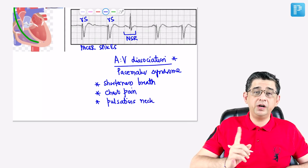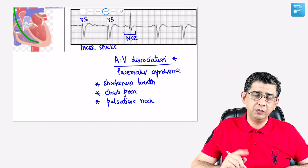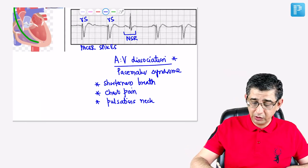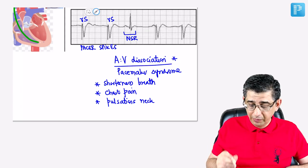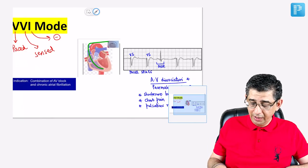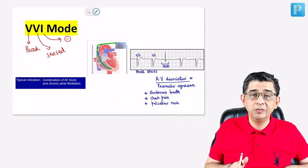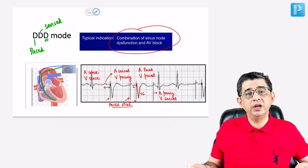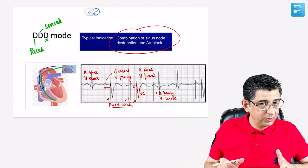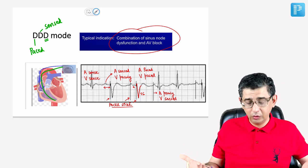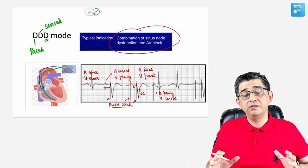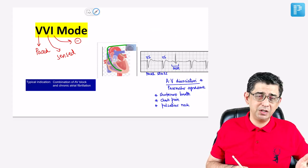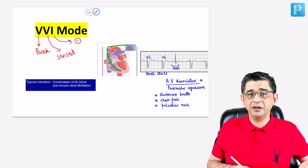The neck pulsations seen in pacemaker syndrome relate to AV dissociation — similar to the 'frog sign.' Key exam points: pacemaker syndrome is commonly seen with VVI mode due to AV dissociation. The recommendation is to switch to DDD mode where both atria and ventricles receive attention. VVI mode can be used in complete heart block but is less preferred because of this disadvantage; DDD is what is usually recommended.